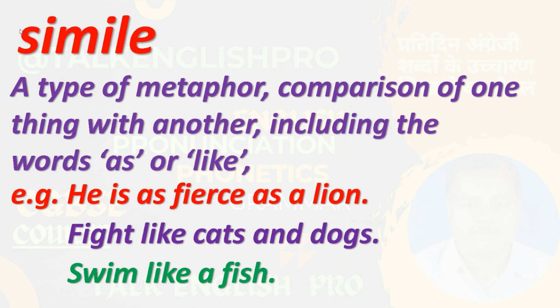Next is simile — it also works like metaphor. A simile is a type of metaphor: a comparison of one thing with another, including the words 'as' or 'like.' When a comparison is made using 'as' or 'like' to describe the quality of something, it is called a simile. For example: 'He is fierce as a lion.'